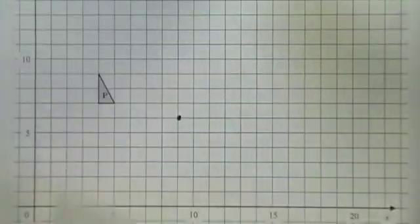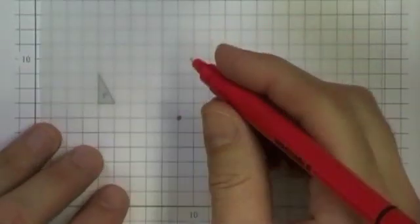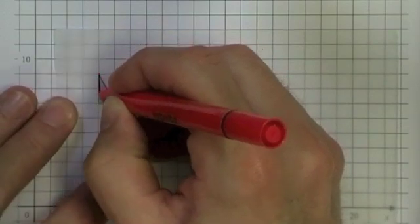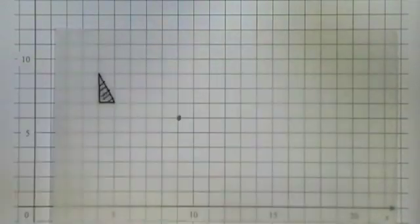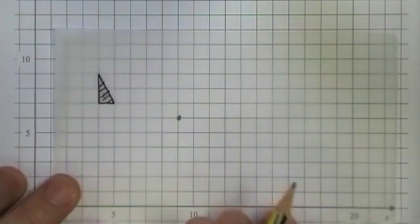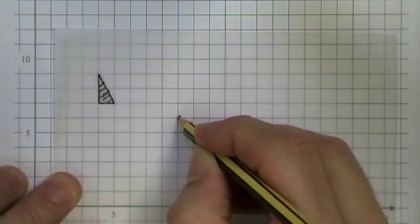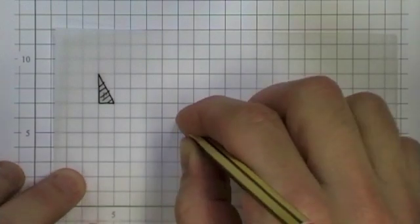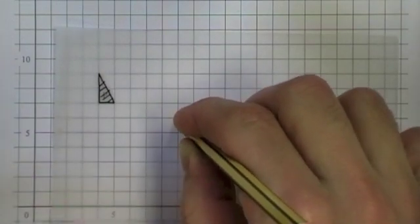So I get my tracing paper, I draw my triangle, trace it out. I'm going to put a sharp pencil on the center of rotation and then I'm going to rotate that triangle so it's 180 degrees. That means it's going to go all the way upside down.